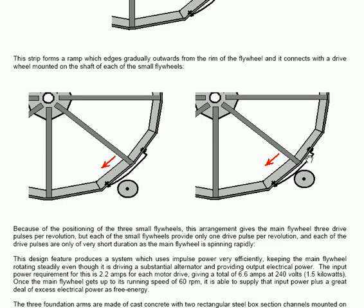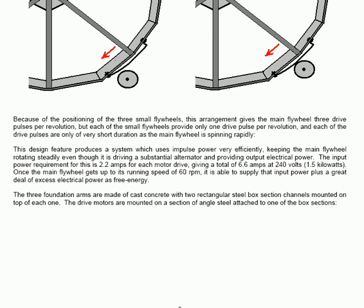Because of the positioning of the three small flywheels, this arrangement gives the main flywheel three drive pulses per revolution. But each of the small flywheels provides only one pulse drive per revolution, and each of the drive pulses are only a very short duration as the main flywheel is spinning rapidly. This design feature produces a system which uses impulse power very efficiently.